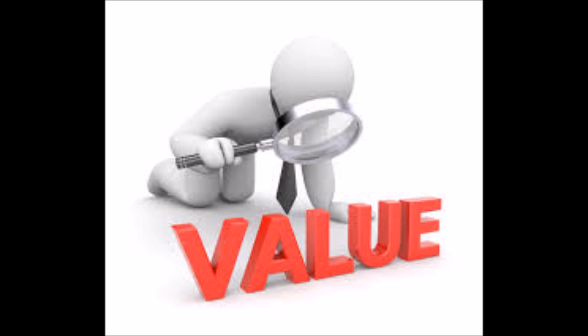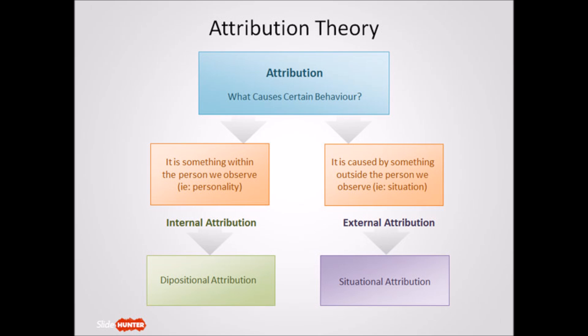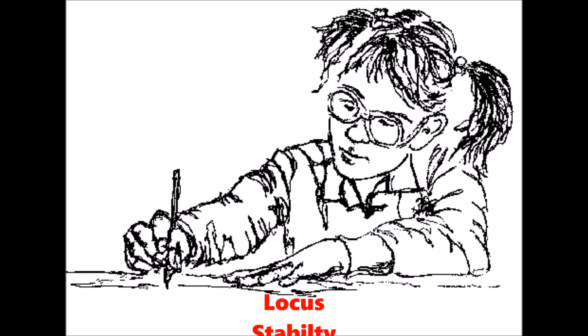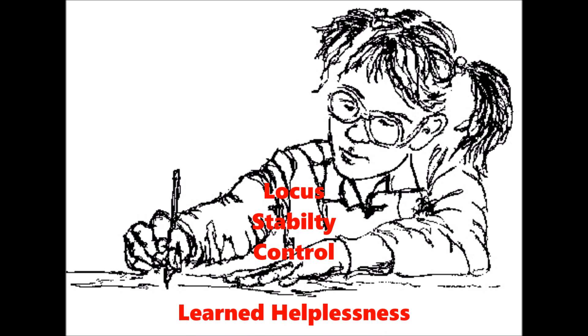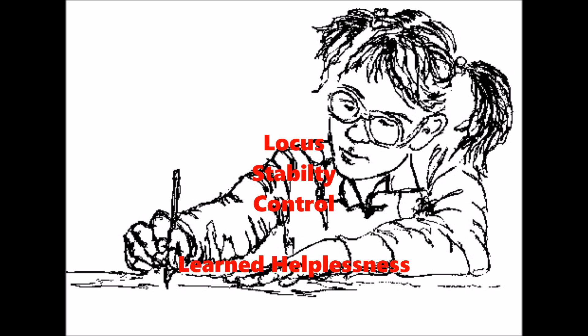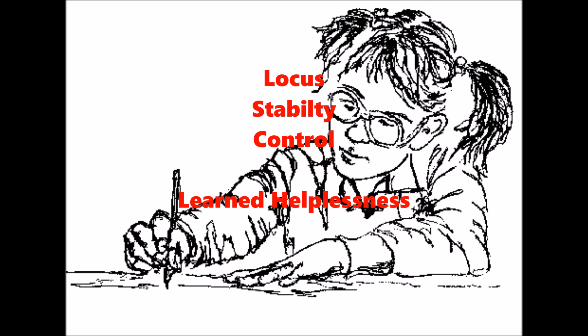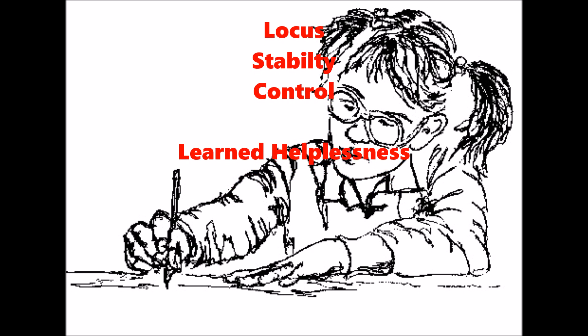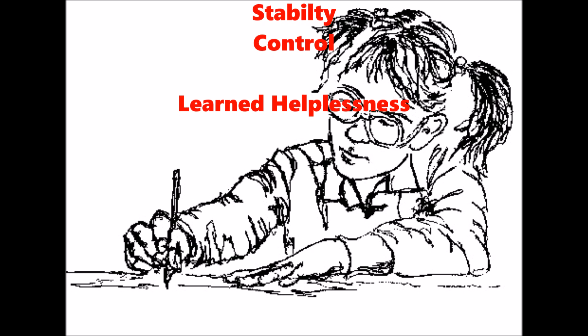Values refer to the benefits, rewards, or advantages that an individual experiences from participating in an activity. The attribution theory deals with a learner's beliefs about the causes of their success and failures, and how these beliefs influence their motivation. These things exist on a three-dimensional scale with locus, stability, and control. The locus deals with whether a cause is inside or outside the learner's control; stability refers to whether the situation is stable or unstable; and control relates to whether the learner has any control. Lack of control can lead to learned helplessness.